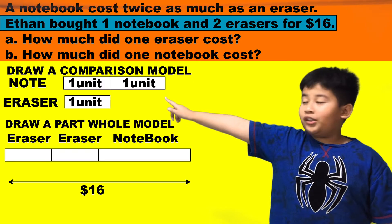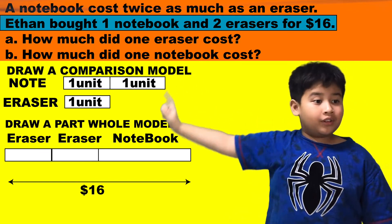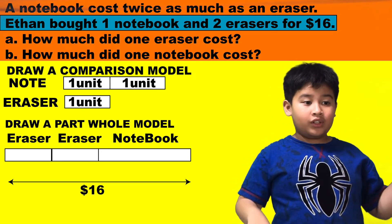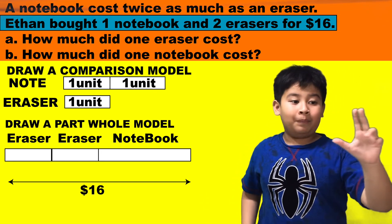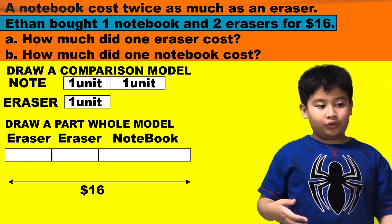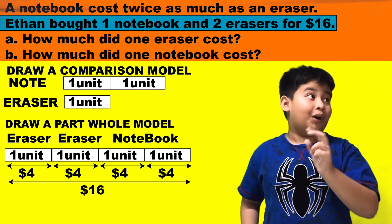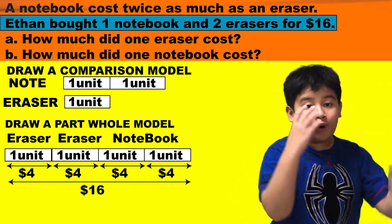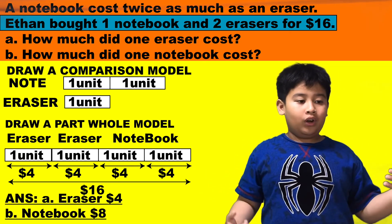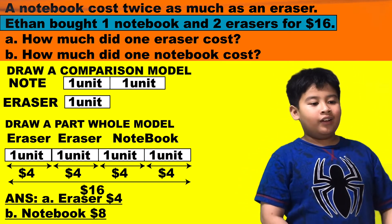Next, you draw a part-whole model like the one shown. Ethan bought one notebook and two erasers for $16, so eraser plus eraser plus notebook equals $16. You have one unit, one unit, one unit, and one unit — four units altogether. So 16 divided by 4 equals 4. Therefore A equals $4, and B is 4 times 2, so the answer for B is $8.